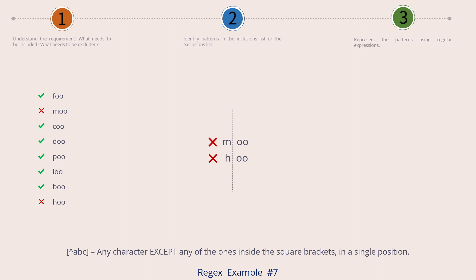Let's apply this character class to our current example and move to our final step. To the left of the vertical separator we have created a character class which starts with the negation symbol caret, followed by the letters M and H inside square brackets. Please note that the caret symbol as well as the letters don't have any spaces or commas in between them — they are simply written one after the other. Then we have the fixed letters OO to the right. So the final regex string would be the character class of caret MH followed by two O's.